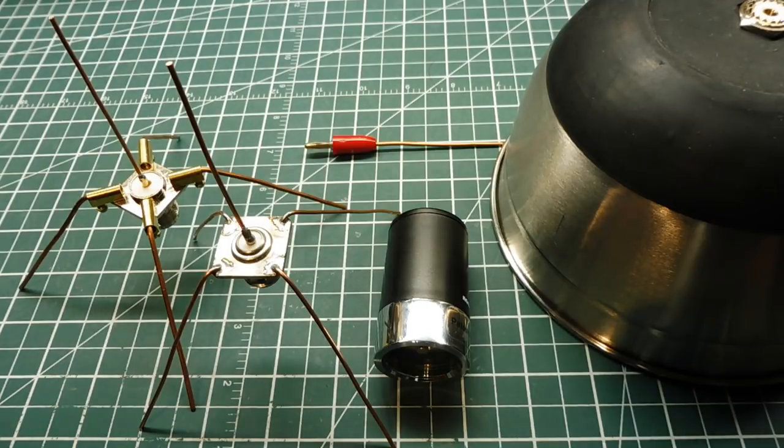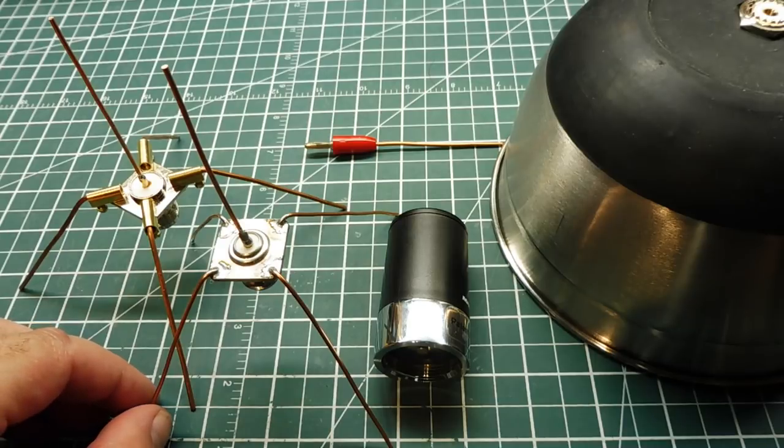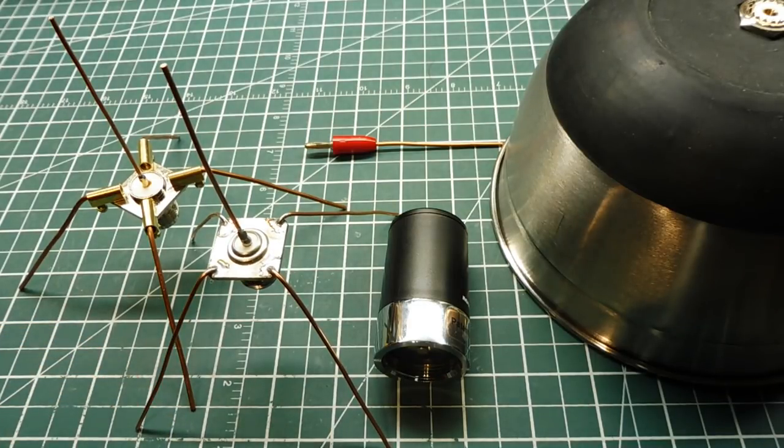Now the best one would be the quarter wave monopole. That's probably the easiest one to build and the best results. So hope this video gave you some information on how to get started on an antenna system for your LoRa radio. Thank you.